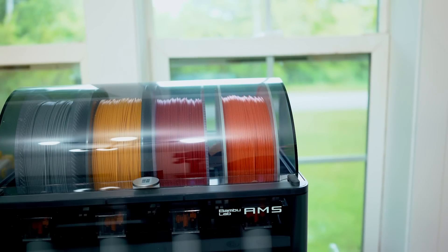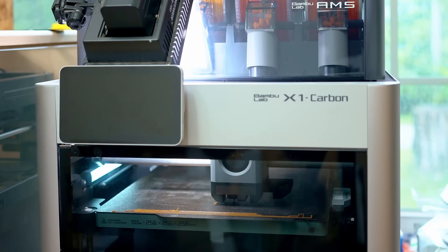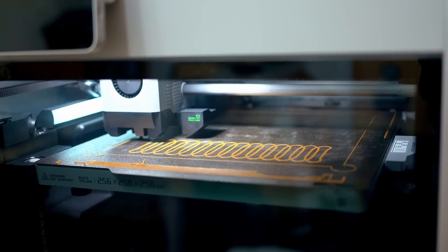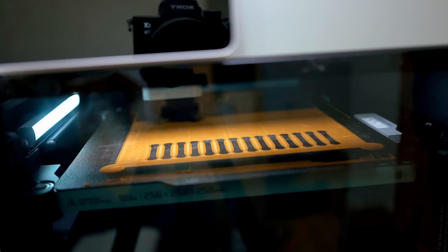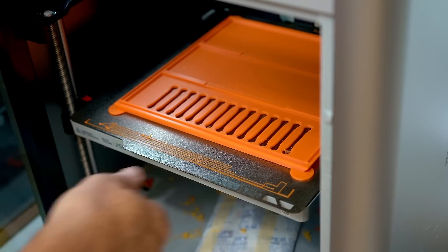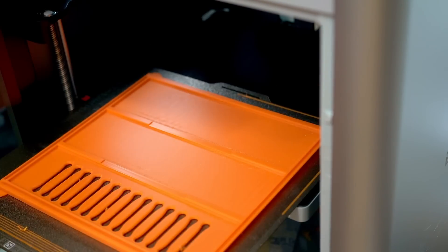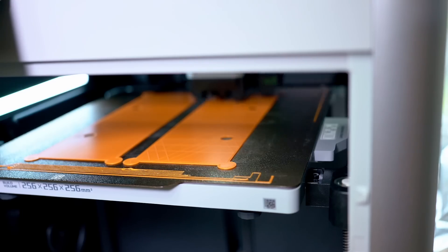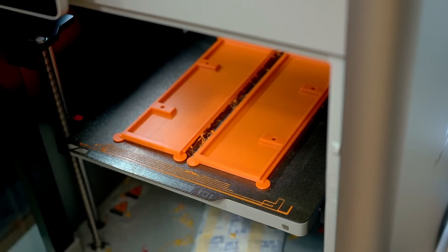And then it's back to the 3D printer to print more parts. This is actually the top panel and it has all these slots in there for ventilation. And the side panels are printed next. Once again, I've got those circles on the corners to keep it anchored down to the build plate.